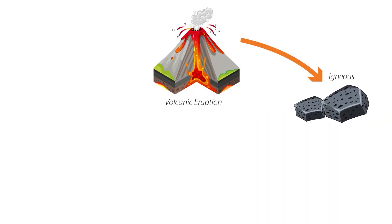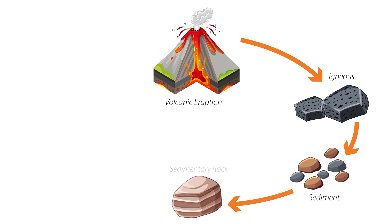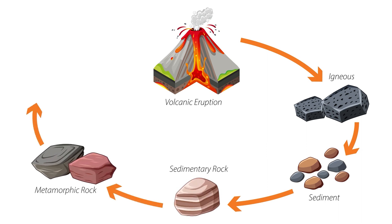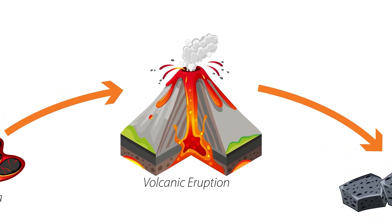So, to recap, the rock cycle is a never-ending process. Rocks start as igneous, break down to form sedimentary, and are transformed into metamorphic under heat and pressure. Eventually, they may melt back into magma, and the cycle begins again.